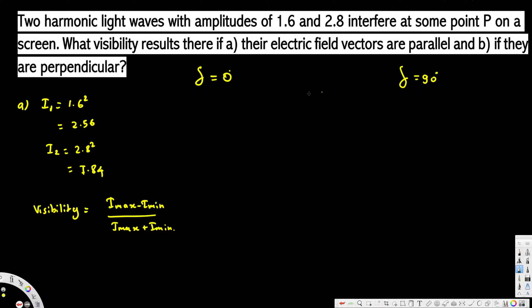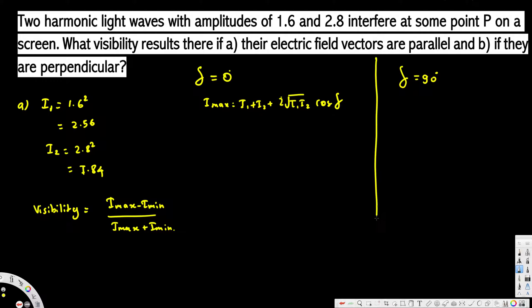To calculate Imax we use: Imax = I1 + I2 + 2√(I1·I2)·cos(δ). With δ = 0°, cos(0°) = 1, so this becomes I1 + I2 + 2√(I1·I2). Plugging in the values: 2.56 + 7.84 + 2√(2.56 × 7.84) gives us Imax = 19.36 W/m².